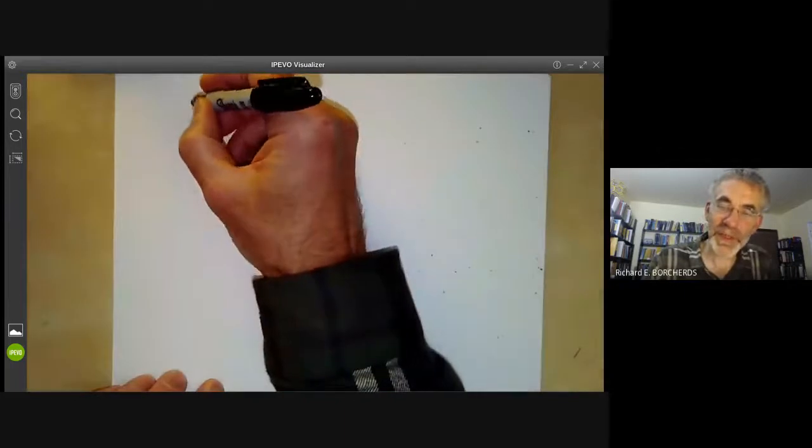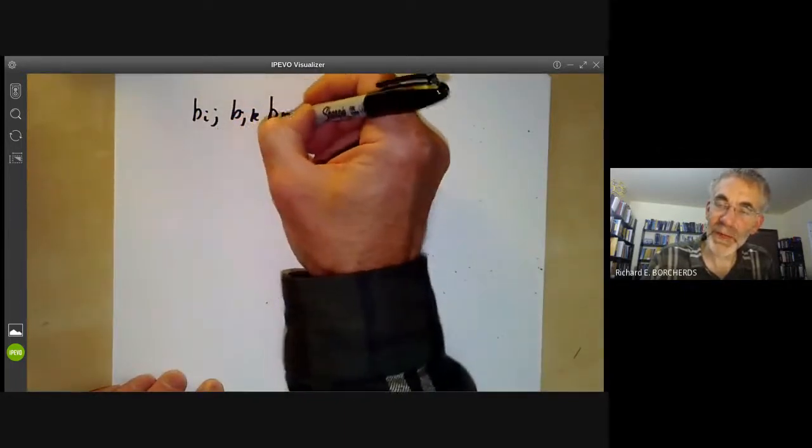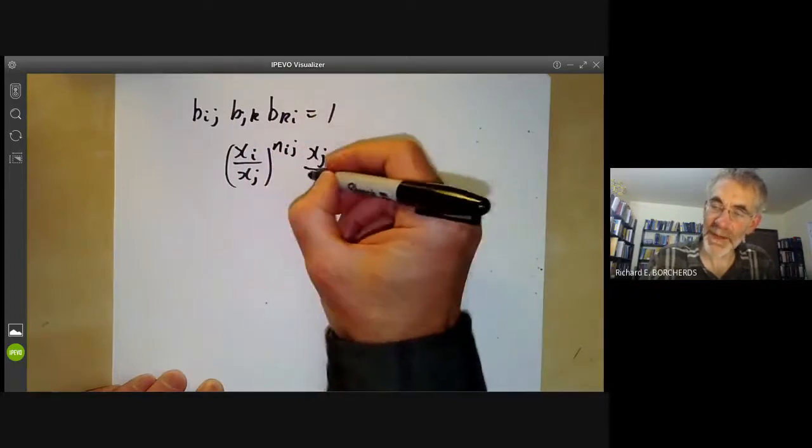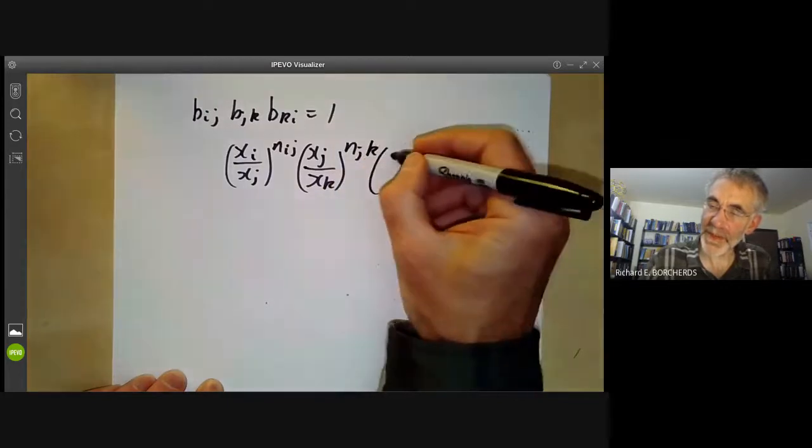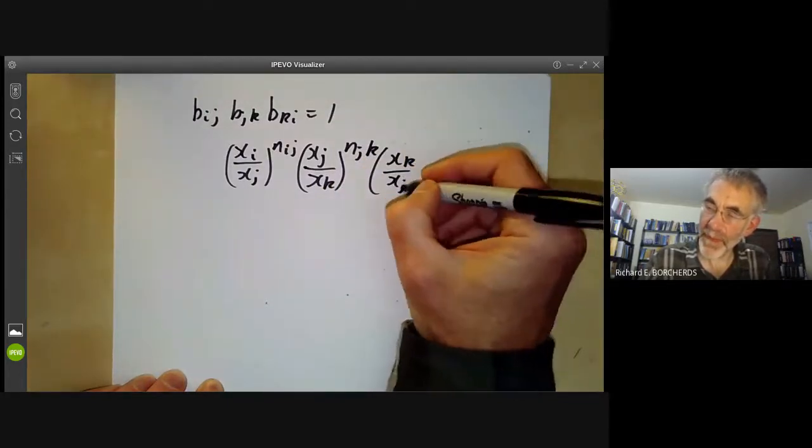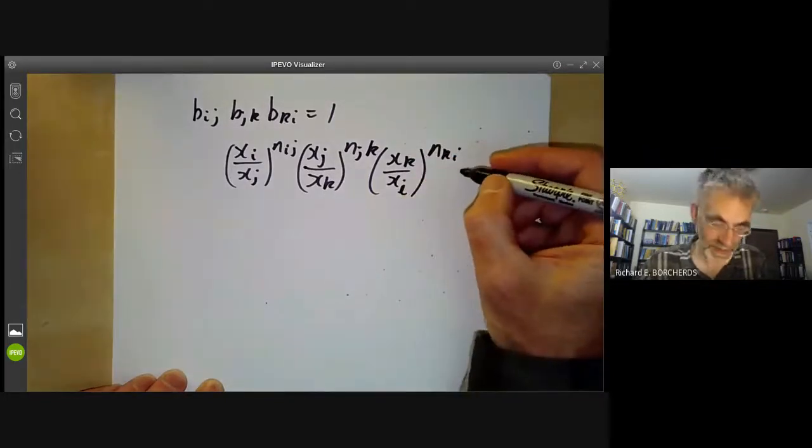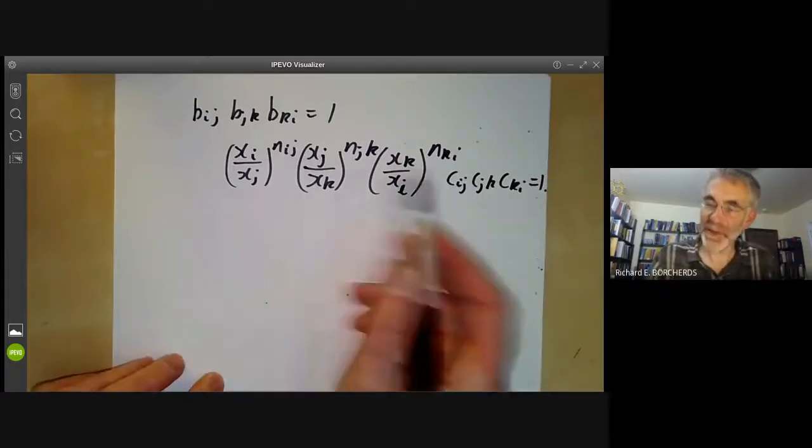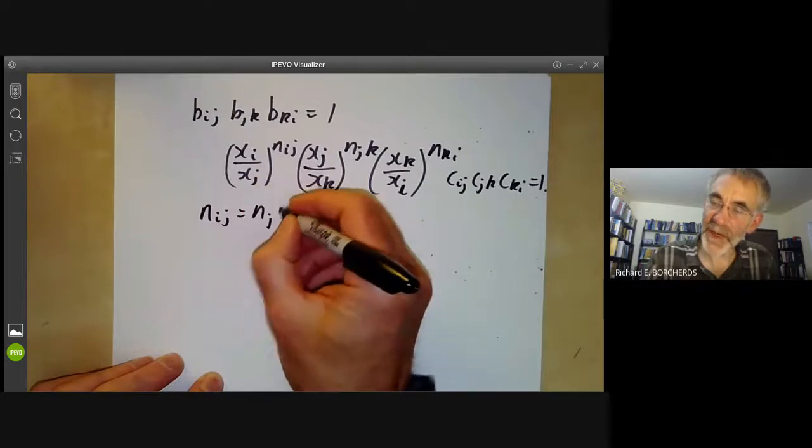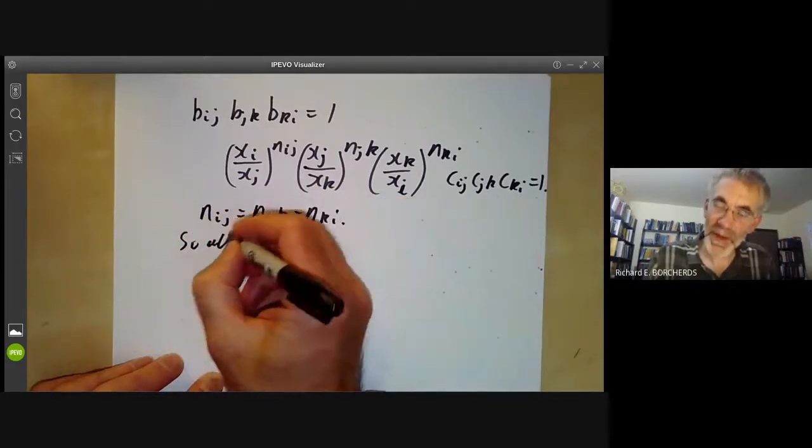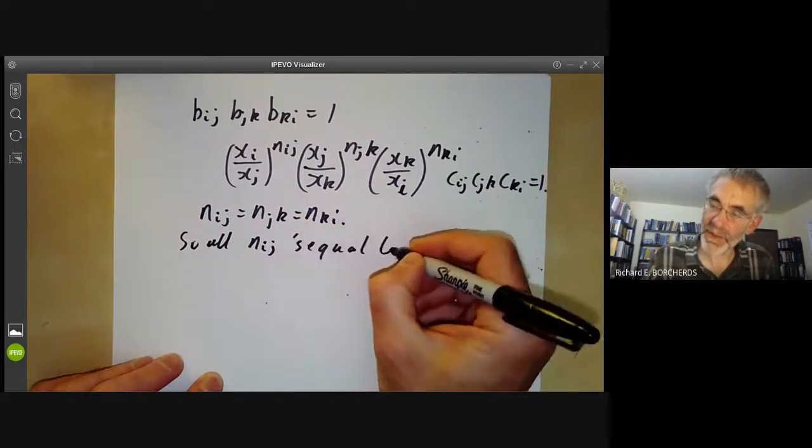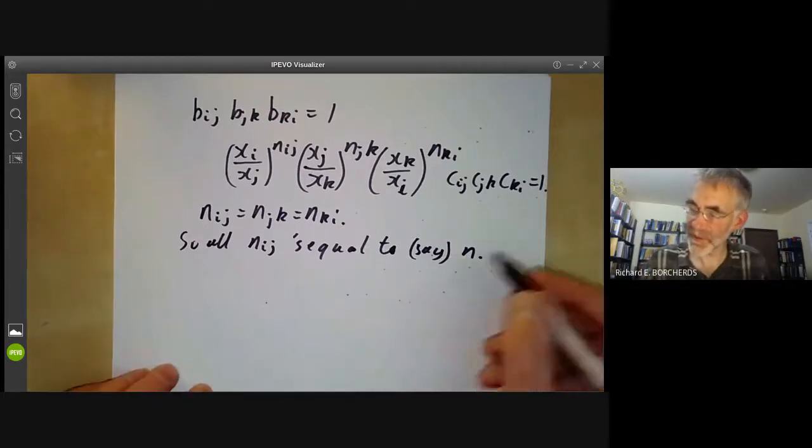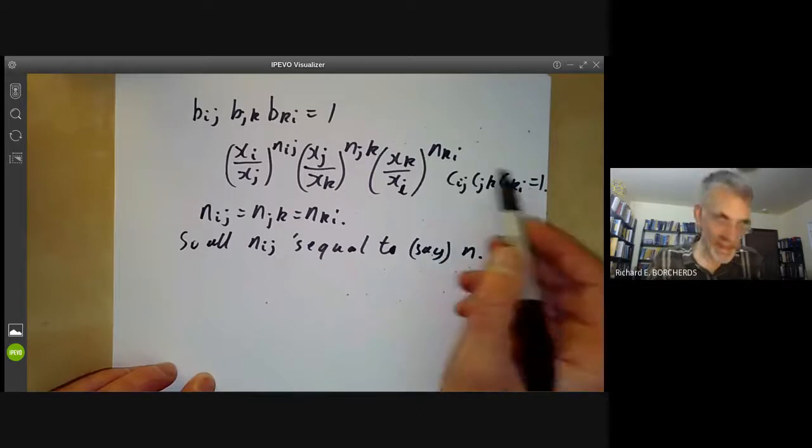B_ij is given by these numbers. Now we apply the one co-cycle condition, which says B_ij times B_jk times B_ki equals one. We find (X_i over X_j)^(N_ij) times (X_j over X_k)^(N_jk) times (X_k over X_i)^(N_ki) times C_ij times C_jk times C_ki equals one. There's an immediate consequence of this. You can see that N_ij equals N_jk equals N_ki. So all the N_ijs are equal to some number N. I'm using that for the dimension of projective space as well, which I shouldn't have done.